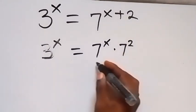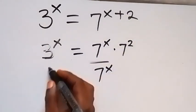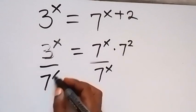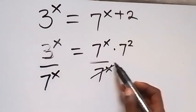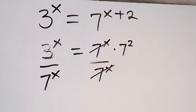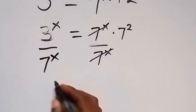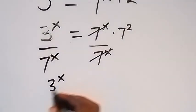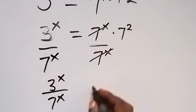From here, let's separate the power of x to one side. Divide this side by 7 raised to power x and also divide this side by 7 raised to power x, such that 7 raised to power x cancels. What we have left now is 3 raised to power x over 7 raised to power x.